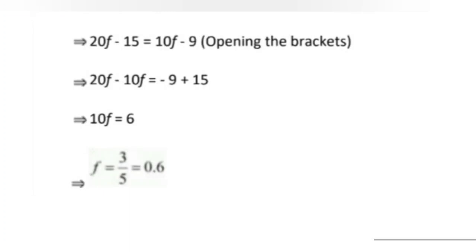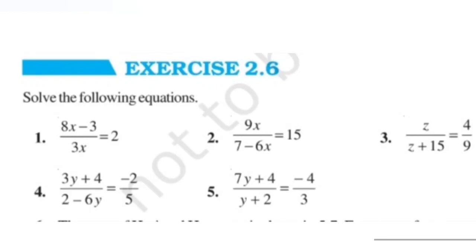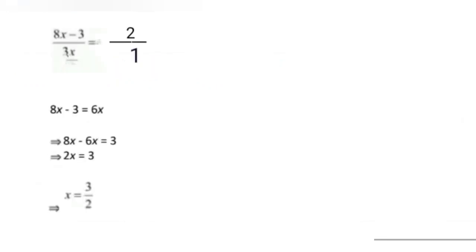Now let us see exercise 2.6. The question is: solve 8x minus 3 upon 3x is equal to 2. First multiply both sides by 3x: 8x minus 3 equals 2 into 3x, which is 6x. Writing variables separately: 8x minus 6x equals 3, so 2x equals 3, meaning x is equal to 3 upon 2.